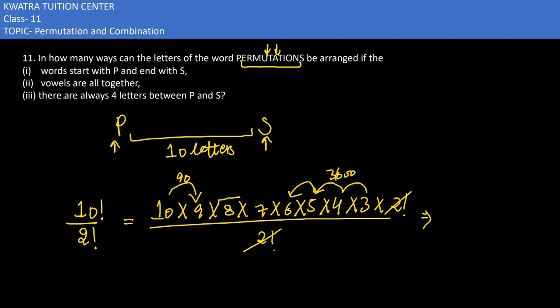Now multiply 3600 with 90, so 3600 into 90 will give you 324,000. And 8 into 7 is left over, so this will be 56. You will multiply it with 56. So what will be the final answer? 18,14,400.